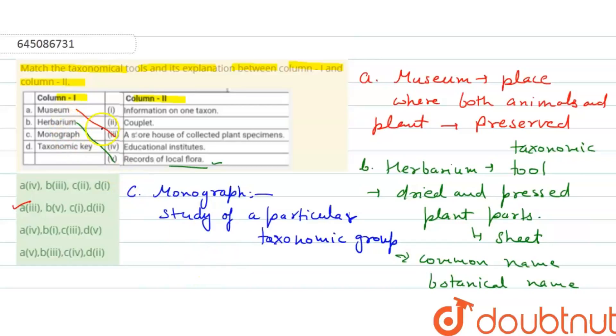The taxonomic key is a taxonomical aid that helps in identification.